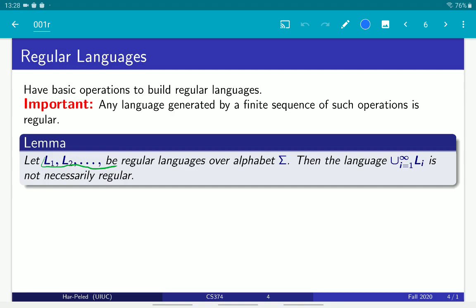In particular, if I allow you to do infinite union, then you take a collection of languages, each one of them regular, and you take their infinite union—you don't necessarily get a regular language. I'm not going to prove it now because it's a bit too early.